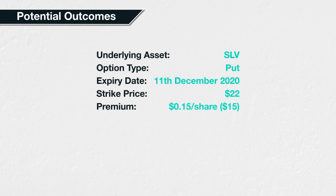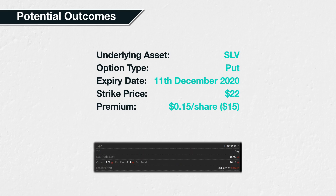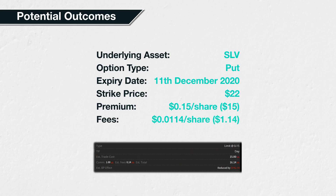Let's remind ourselves of the option parameters: the underlying asset is shares of SLV, the option type is put, the expiry date is the 11th of December 2020, the strike price is $22, and the option price or premium is $0.15 per share. As this is a real-world example, we will also include the fees in our calculations. The total fees and commissions for our order were $1.14. As the contract multiplier for SLV is 100, each option contract represents 100 shares. We bought one contract representing 100 shares, so this total fee of $1.14 equates to a fee per share of $0.0114, or a little over 1 cent. This per share amount will help us in some of our calculations.